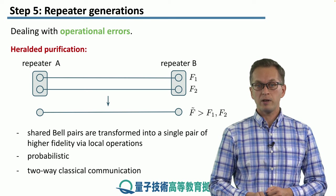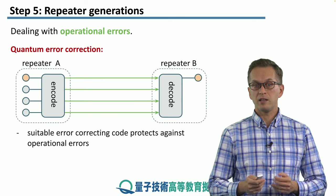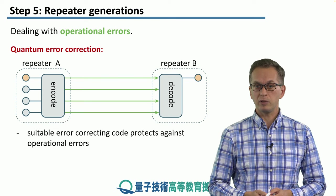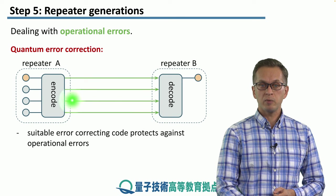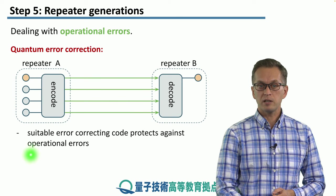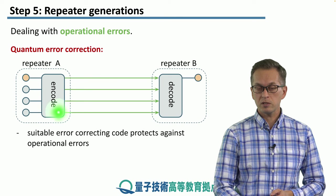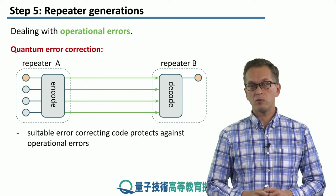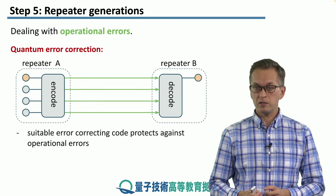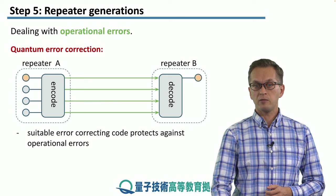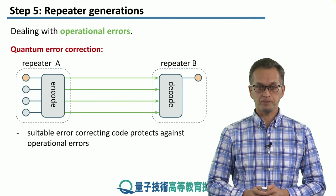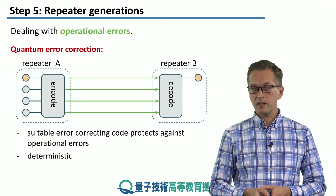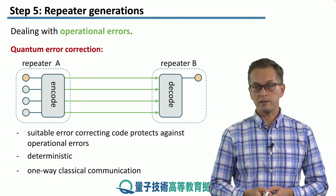A different way of dealing with operational errors is, again, via quantum error correction, and this is very similar to the scheme for dealing with loss errors. Repeater A has more quantum resources — it has multiple qubits, which it encodes into a multi-qubit entangled quantum state, which is then sent to repeater B. Repeater B recovers these qubits, decodes them, and recovers the original message. The advantage of this scheme is that it is deterministic and therefore does not require two-way classical communication.